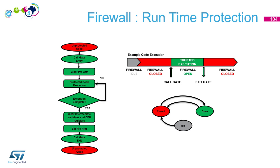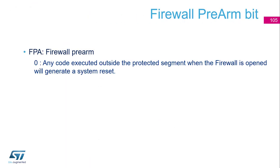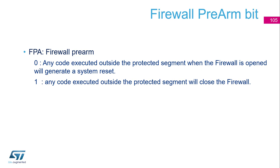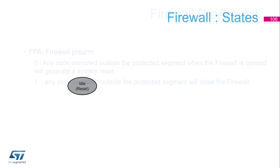Regarding pre-arm: if the FPA bit is set to 0, any code executed outside the protected segment when the firewall is open will generate a reset. If it's set to 1, any code executed outside the protected segment will close the firewall instead. So if you go outside the protected segment and this bit is 0, you get a reset; if it's 1, the firewall just closes with no reset.